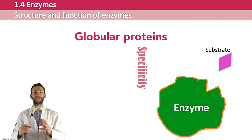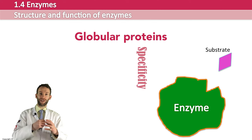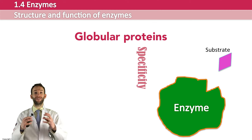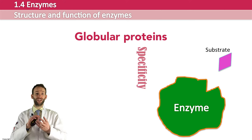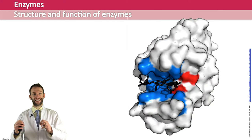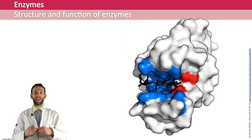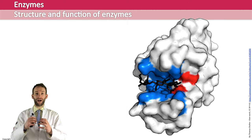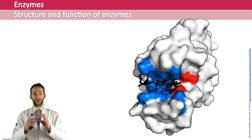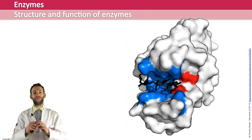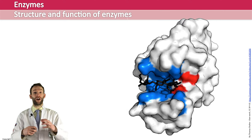The active site is where the substrate binds. The substrate is the molecule that the enzyme will act on. The active site is a very small part of the enzyme, and its shape is dependent on that amino acid sequence and how the protein folds up. The substrate will bind into it by forming weak, non-covalent interactions with the R groups of the active site's amino acids.